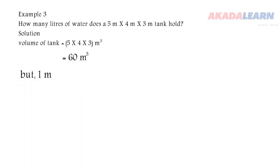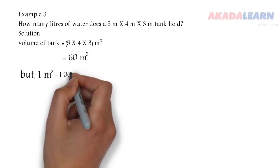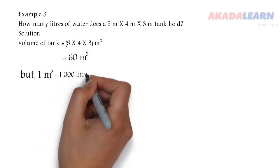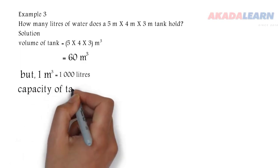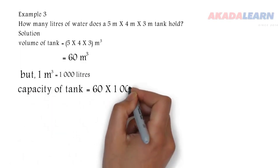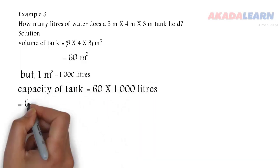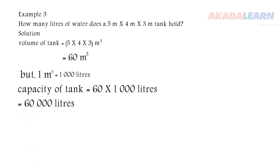But we know that 1 m³ is equal to 1000 liters. So we are going to convert that meter cube to liters. Simply, the capacity of the tank will be 60 times 1000 liters, which is 60,000 liters.